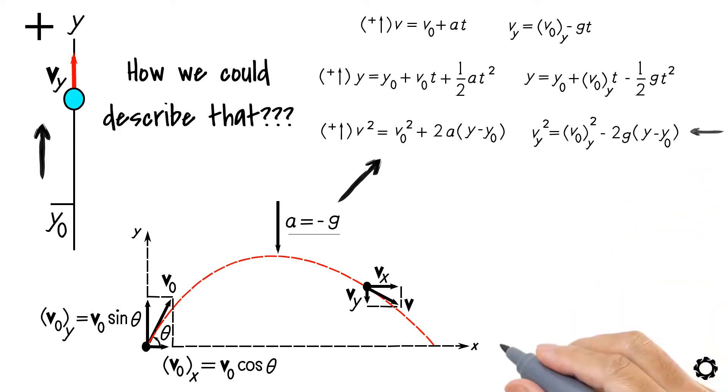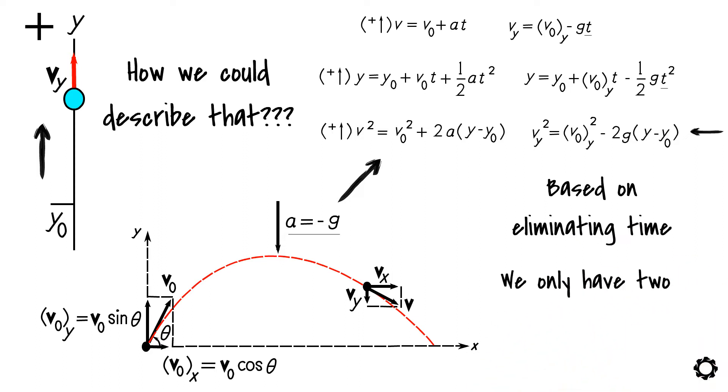The second equation is based on eliminating time, t, between the first two equations. Therefore, we only have two independent equations to describe the vertical motion of our projectile which are the first two equations.